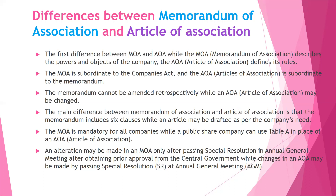The next difference is that the Memorandum of Association includes six compulsory clauses and one additional clause in the case of a One Person Company, as explained in a previous session. While the Articles of Association may be drafted as per the company's needs and requirements. The Memorandum of Association is mandatory or compulsory for all companies, while a public share company can use different forms — that is, Table A — in place of Articles of Association.